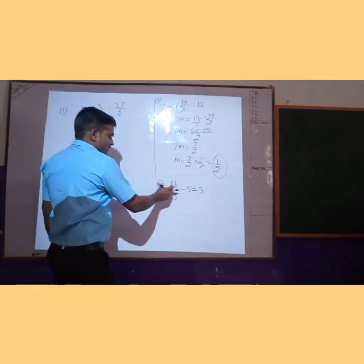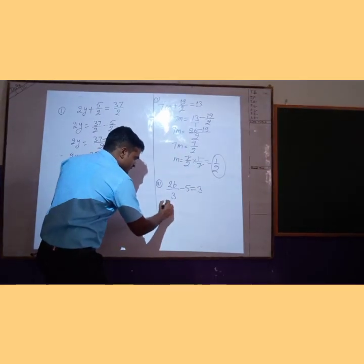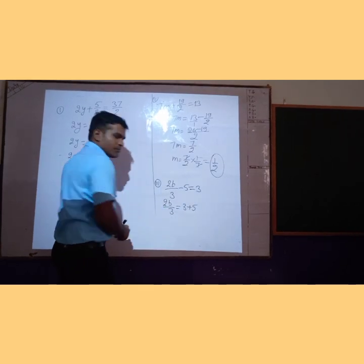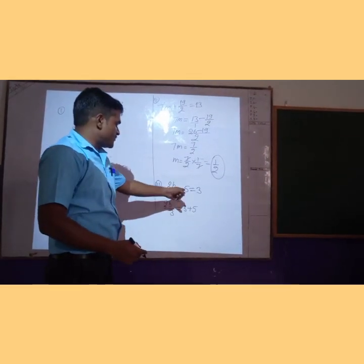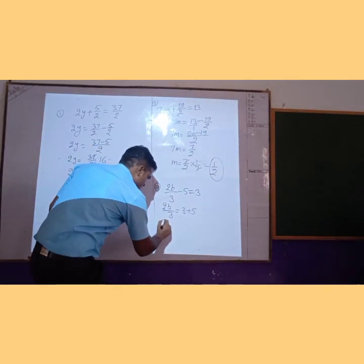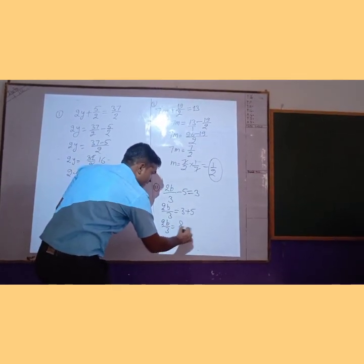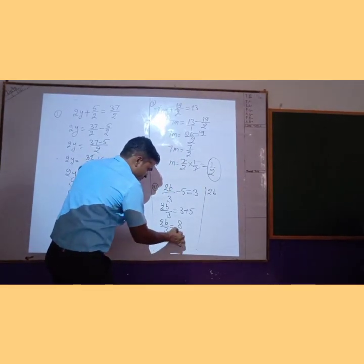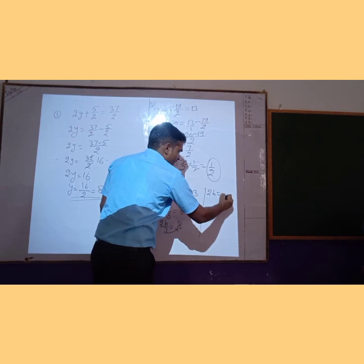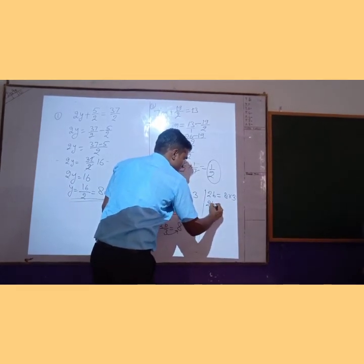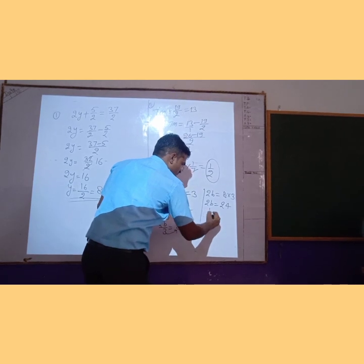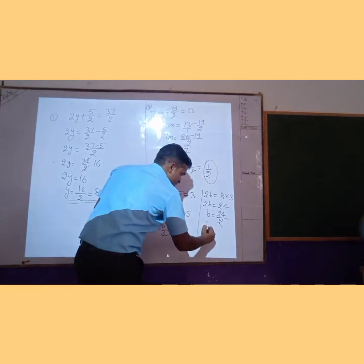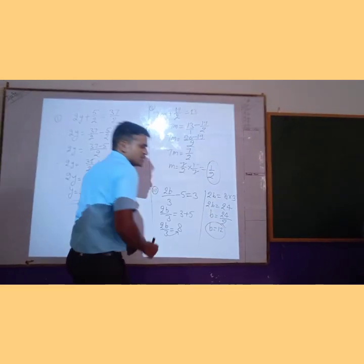Sixth problem: 2b upon 3 minus 5 is equal to 3. We transpose minus 5 from left to right by the transposition law, so 2b upon 3 is equal to 3 plus 5, which is 8. We transpose 3 from left to right — since it is dividing, it will be multiplied — so 2b is equal to 8 multiplied by 3, which is 24. Therefore b is equal to 24 divided by 2, which gives 12.